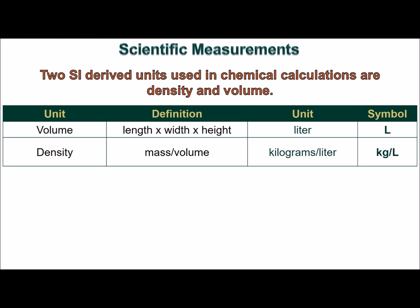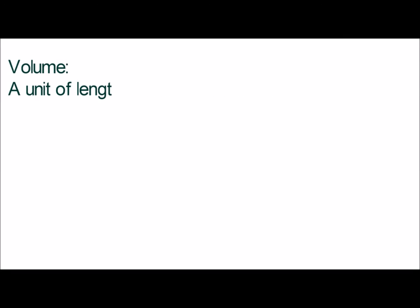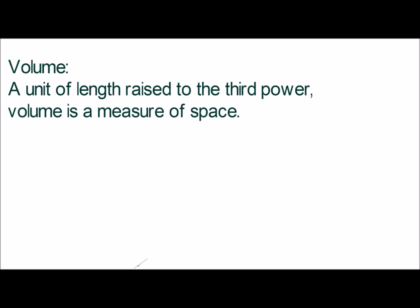Two SI-derived units that are used extensively in chemistry are volume and density. A derived unit is a combination of other SI units. Volume is a unit of length raised to the third power. This means that volume is a measure of space.